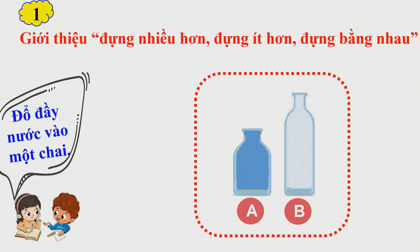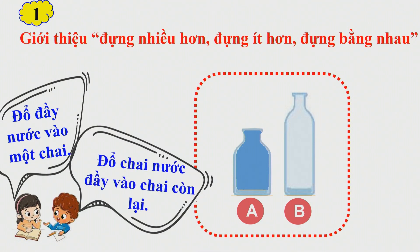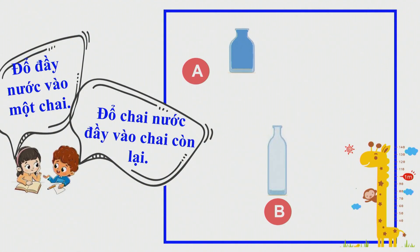Để giải đáp câu hỏi của bác gấu, hai bạn nhỏ đã tranh luận với nhau và có một cách để thực hiện. Đó chính là chúng ta sẽ đổ đầy nước vào một chai, và chúng ta sẽ đổ chai nước đầy vào chai còn lại. Cô đã đổ đầy nước vào chai A. Bây giờ cô sẽ đổ nước của chai A vào chai B. Hãy nhìn vào mô hình và dự đoán cho cô biết khi cô đổ nước từ chai A sang chai B thì điều gì sẽ xảy ra?